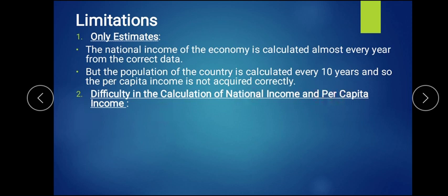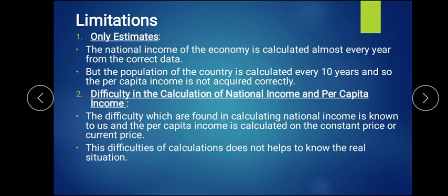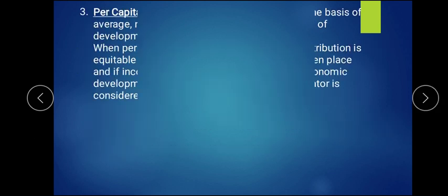Second, there is difficulty in the calculation of national income. Issues like double counting, tax evasion, tax avoidance, transfer payments, and depreciation not being calculated properly all create inaccuracies. Also, calculating on constant price versus current price creates differences. Due to these risk factors in calculating per capita income and national income, it does not give exact correct figures, so the true situation of per capita income is not fully known.